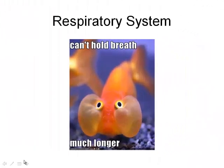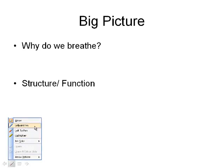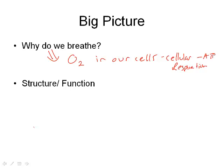Welcome back, this is part one of the respiratory system. This first part is looking at the pathway that air takes and some of the reasons why we do that. The big picture: why do we breathe? The main reason we breathe is to bring in nutrients for our cells to survive. We need oxygen in our cells because it is used for cellular respiration, which leads us to produce ATP, which we use as an energy source.